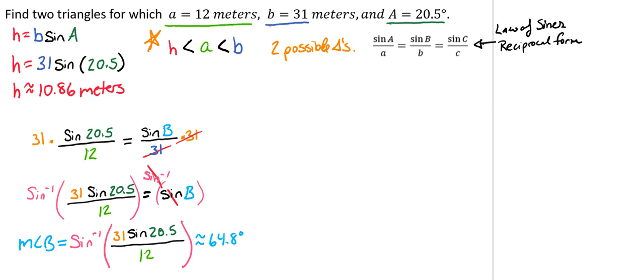So if our triangle is acute, we use the 64.8. But if that angle B is obtuse, we're going to have to know what that angle would be. So to find that, what we're going to do is we're going to take 180, and then we're going to subtract our 64.8. And that's going to tell us that other angle could be 115.2 degrees. So to keep these straight, let's call our 64.8 B1, and we'll call our 115.2 B2. That way we don't get them confused.